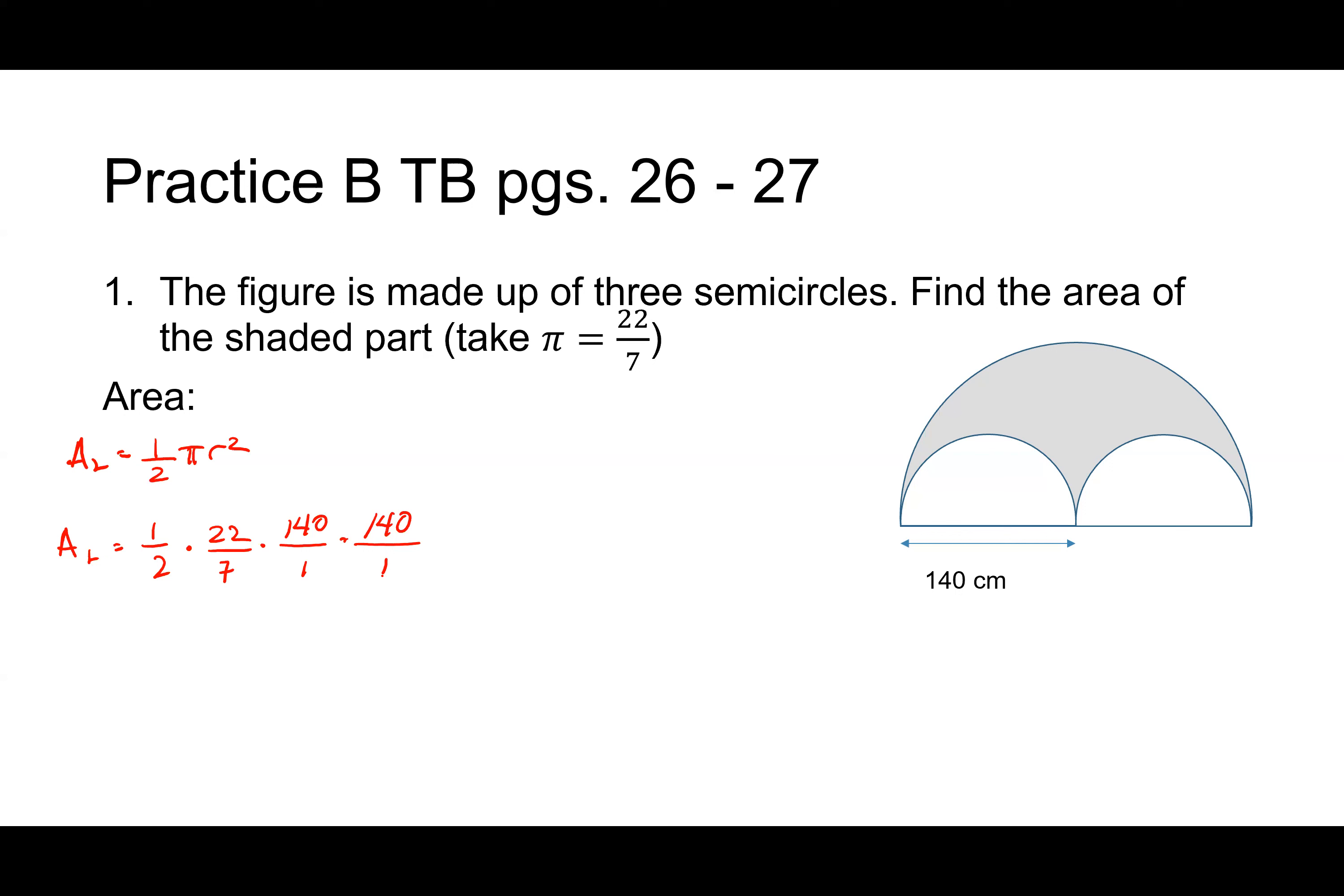So one half times 22 over 7 times 140 times 140. Did you guys set that up correctly? Look at the diagram right there. That's a radius, it's 140. So let's cross cancel that 7 and that goes into 140 twenty times. So now we have 11 times 20 times 140. Let's do 11 times 20. What's 11 times 2, class? 22. So 220 times 140.